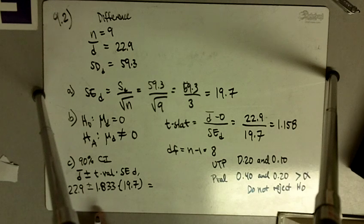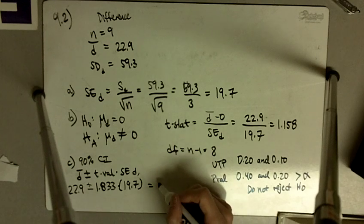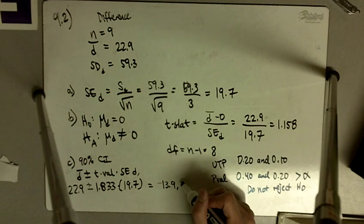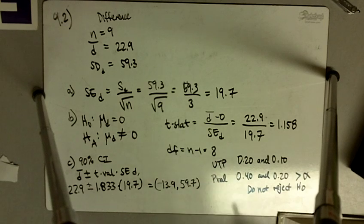And so we get a 90% confidence interval. If we crunch all of this out, on the lower end, we get negative 13.9. And on the upper end, we get 59.7.